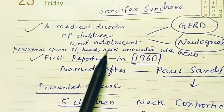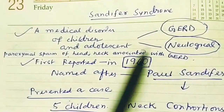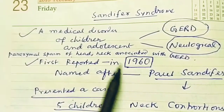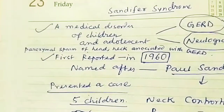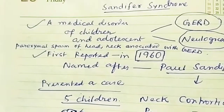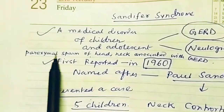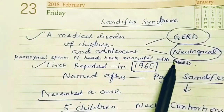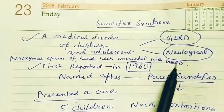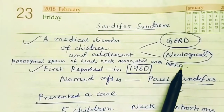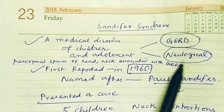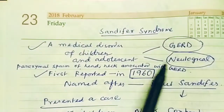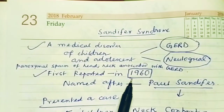Always remember this key line: Sandifer Syndrome is characterized by paroxysmal spasm of the head and neck associated with GERD (gastroesophageal reflux disorder). There is a paroxysmal spasm of the head and neck that is associated with GERD. This was first reported in 1960.